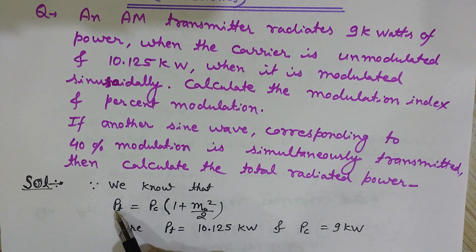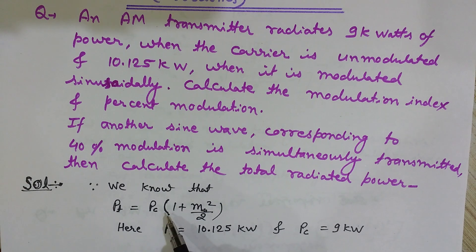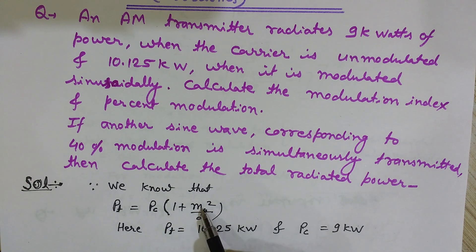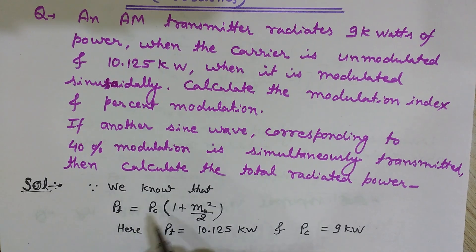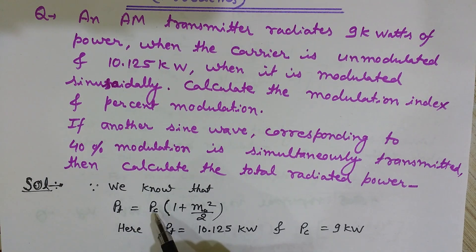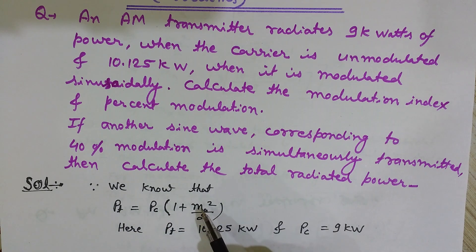I will use this relation: total power Pt equals power of the carrier Pc multiplied by (1 + ma²/2), where ma is the modulation index. I have been given the carrier power and total power, and I want to find the modulation index m.